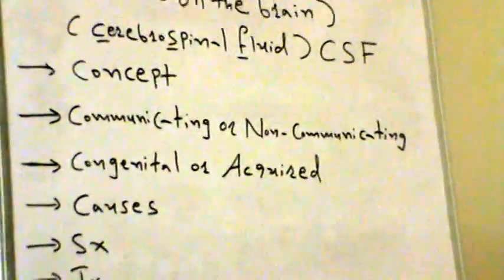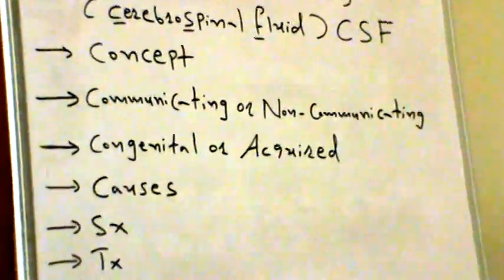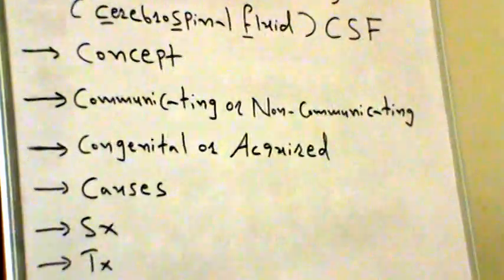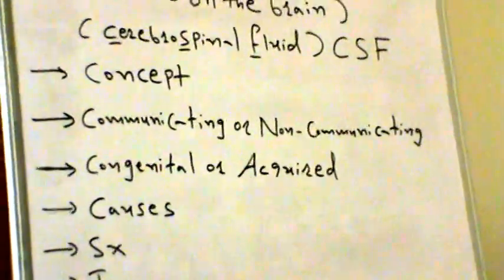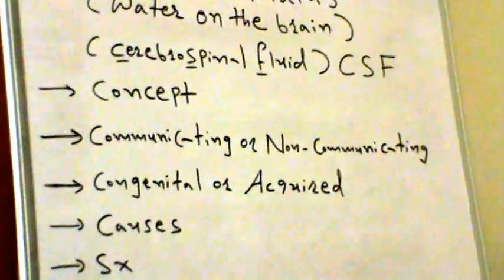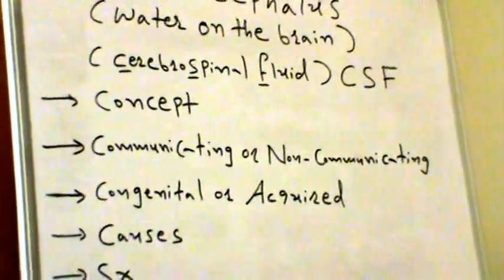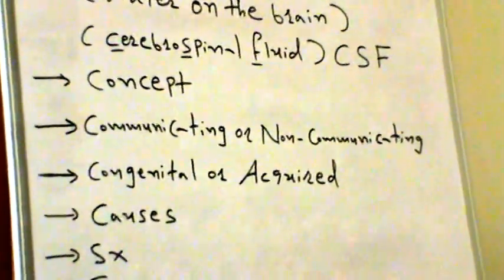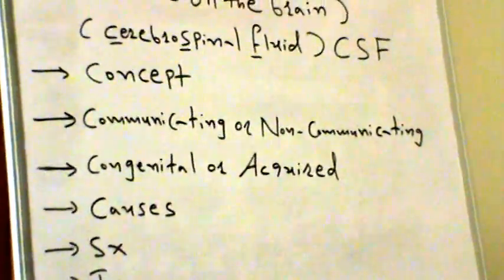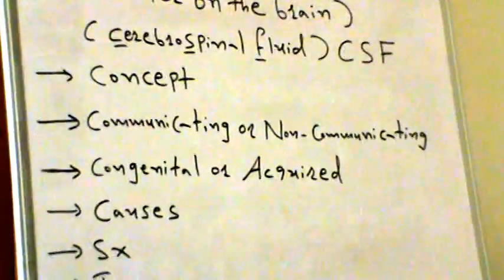Another type of communicating hydrocephalus is normal pressure hydrocephalus. This condition normally strikes those who are middle-aged and older. The classic signs of this condition are dementia, incontinence, and a gait disturbance.